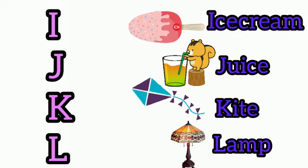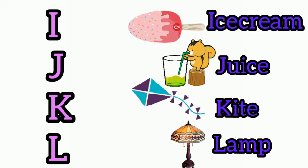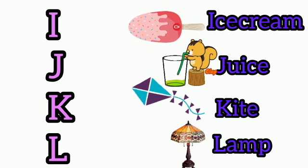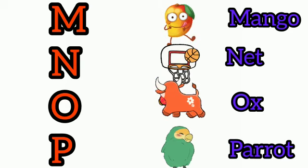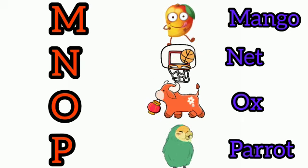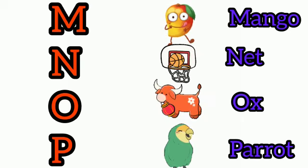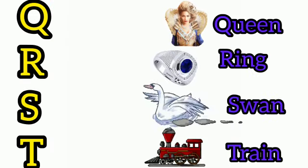I for ice cream, J for juice, K for kite, L for lamp, M for mango, N for nut, O for ox, P for parrot, Q for queen.